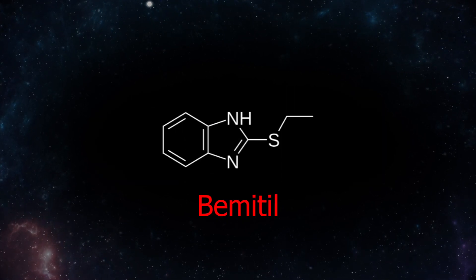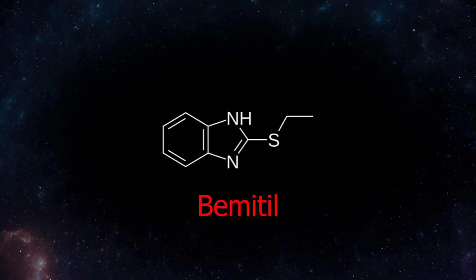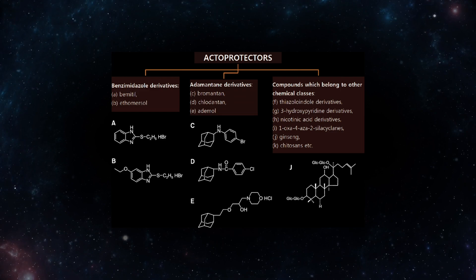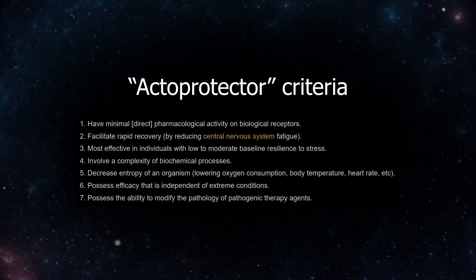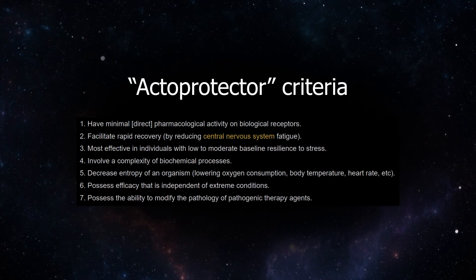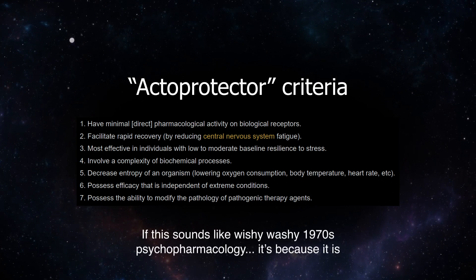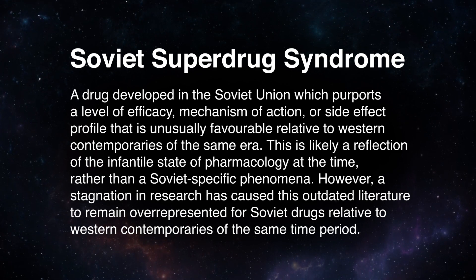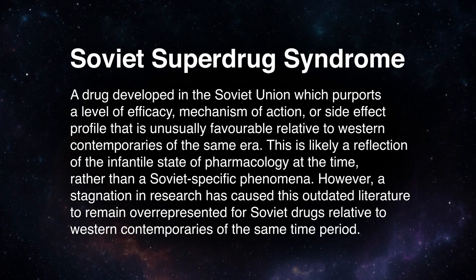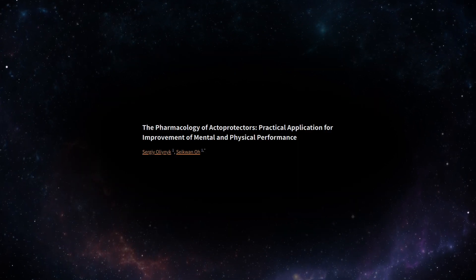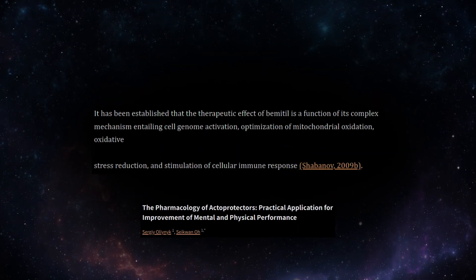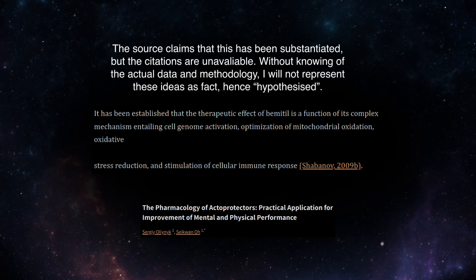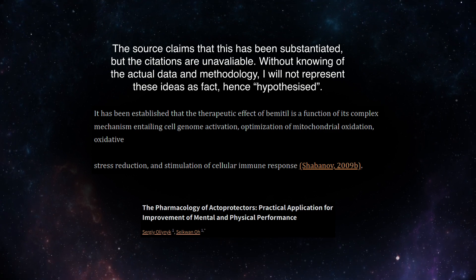Bemitil, also known as bemethyl, is a purported anti-hypoxic, anti-mutagenic and actoprotector drug. The term actoprotector roughly meaning synthetic adaptogen, defined by their purported ability to protect against environmental and psychological stressors via a non-exhaustive action. Of all the mystery Soviet superdrugs, it is perhaps the least characterised with regards to its pharmacological mechanism. The hypotheses presented in the Russian literature postulate that the drug may work at a transcriptional level, influencing the synthesis of various proteins and glucose metabolism, in addition to antioxidant activity.